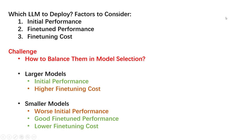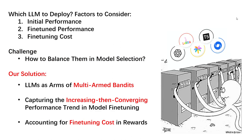The solution proposed in our paper is that we formulate this as a multi-arm bandit problem, with each large language model as an arm. We further capture the increasing-then-converging performance trend during the model fine-tuning process to accurately predict the model performance after fine-tuning, and we also account for fine-tuning costs by introducing the cost into our reward design.